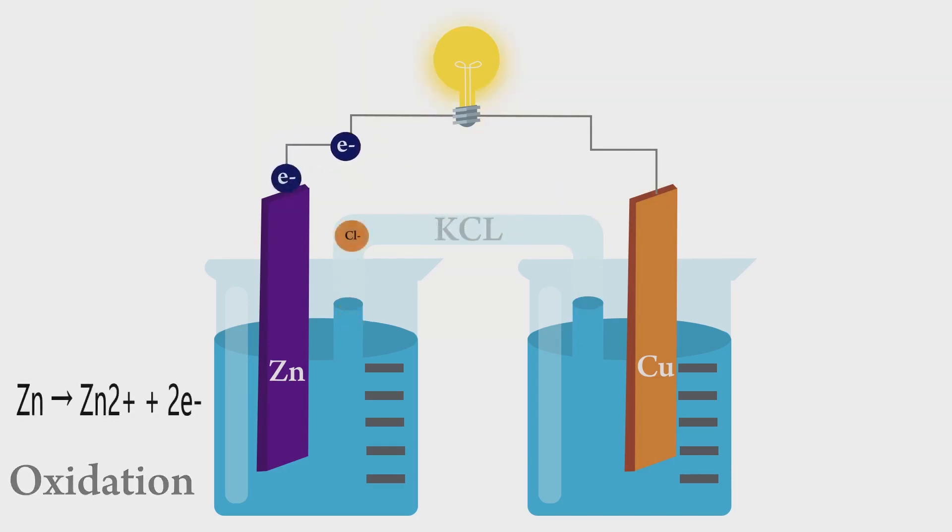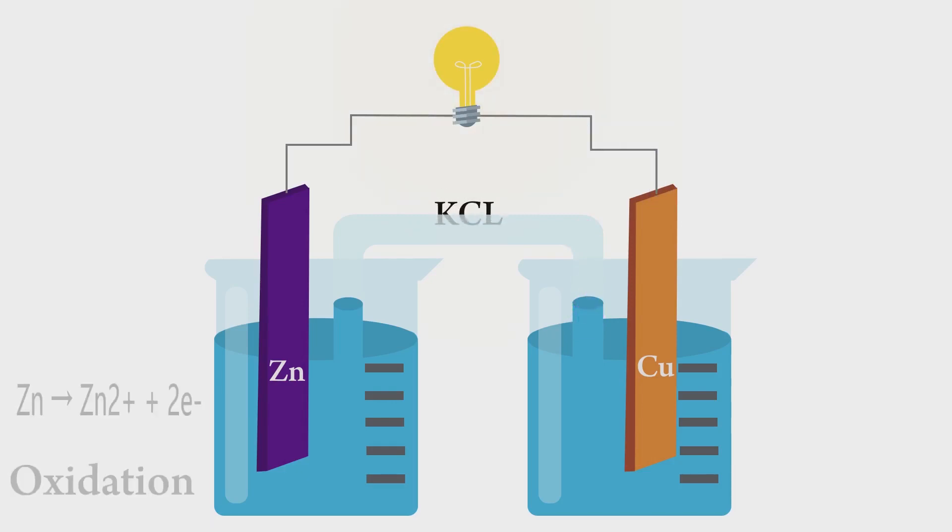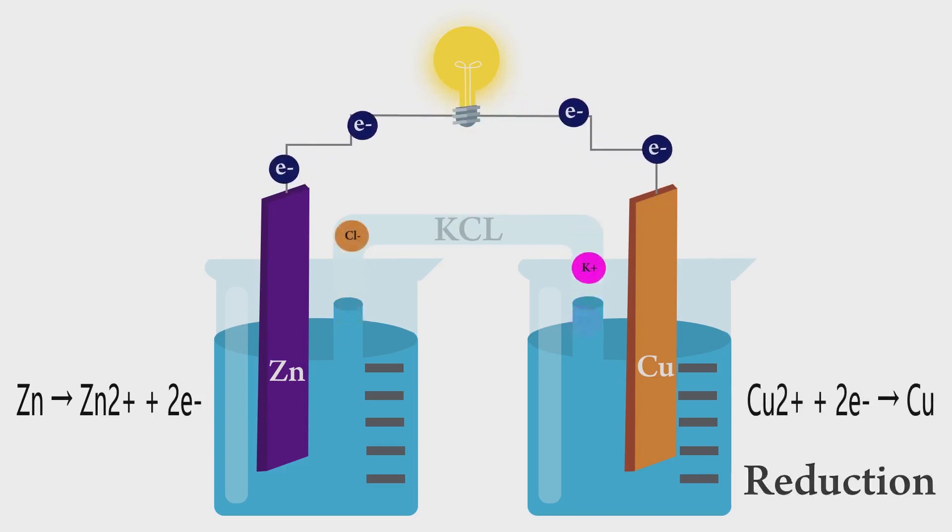The cathode is the electrode where reduction takes place. In a galvanic cell, it is the positive electrode as ions get reduced by taking up electrons from the electrode. The salt bridge contains a solution of potassium chloride which balances the charge differences between the anode and the cathode.